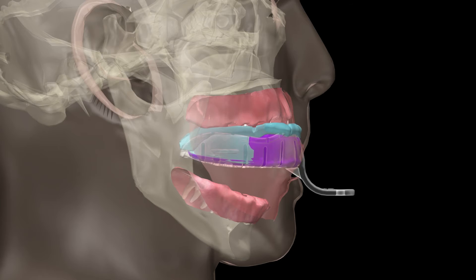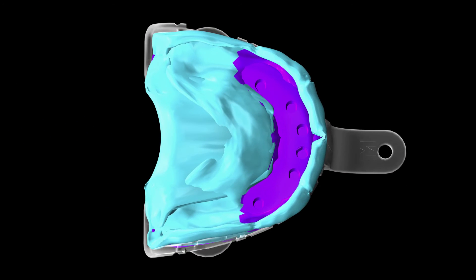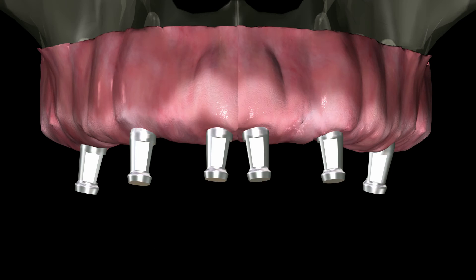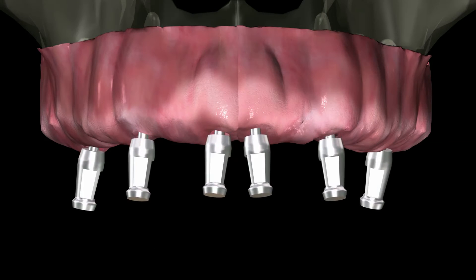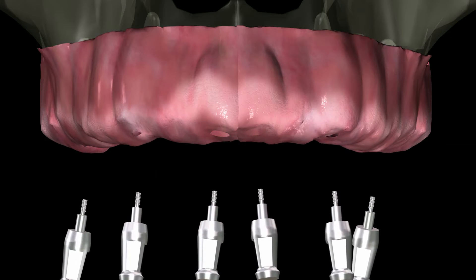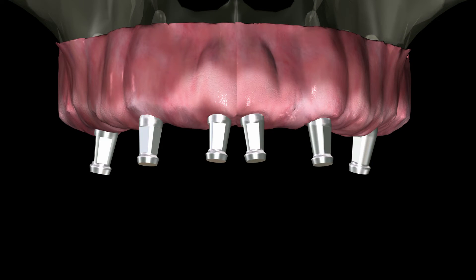When the material has set, remove and inspect. It is very important to note that each non-engaging impression coping is location-specific to each corresponding implant and must be used only with that implant due to thread time. In other words, the start and stop points of the threaded part of the non-engaging impression copings are unique to each component. Therefore, they must not be mixed up in the operatory or the laboratory.